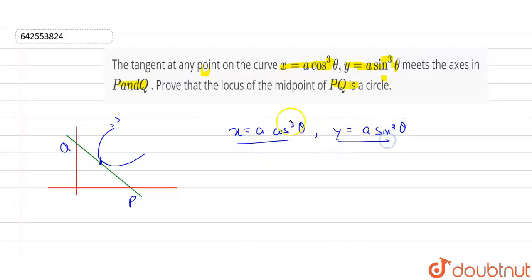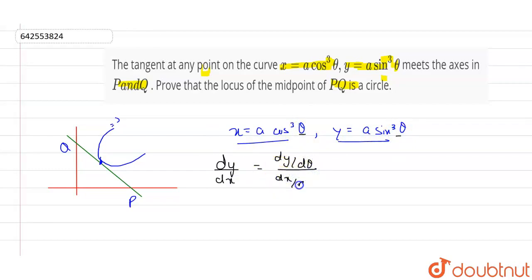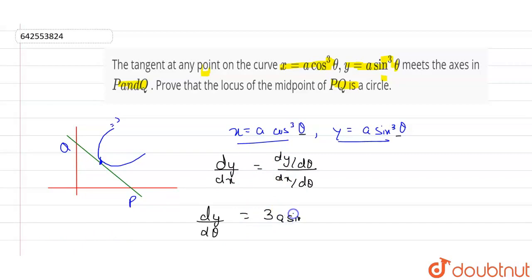To find the slope we need to find dy/dx. But here it's given in terms of theta, so we write it as (dy/dθ) divided by (dx/dθ). First we find dy/dθ: differentiating a sin³θ gives 3a sin²θ · cos θ.